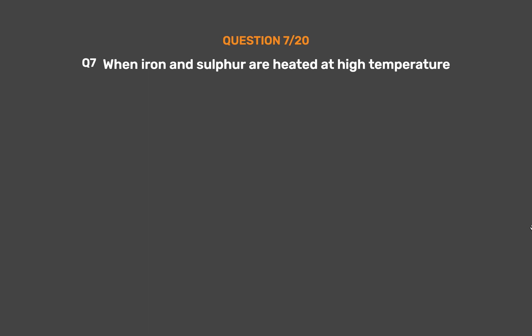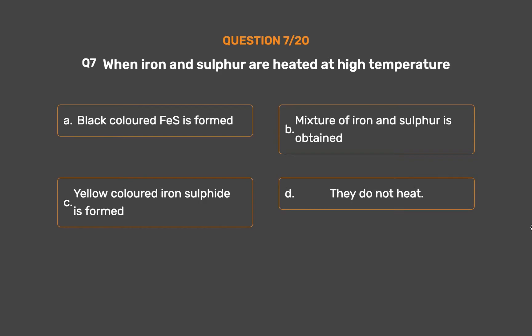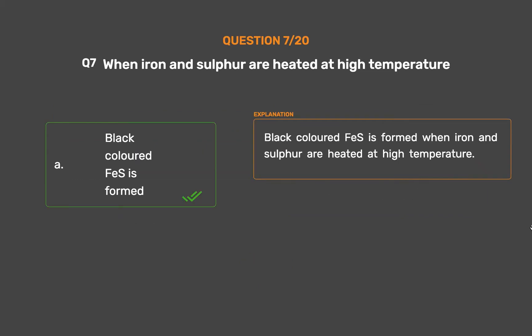Question number 7. When iron and sulfur are heated at high temperature: Option A: Black colored ferrous sulfide is formed. Option B: A mixture of iron and sulfur is obtained. Option C: Yellow colored iron sulfide is formed. Option D: They do not react. The correct answer is Option A: Black colored ferrous sulfide is formed when iron and sulfur are heated at high temperature.